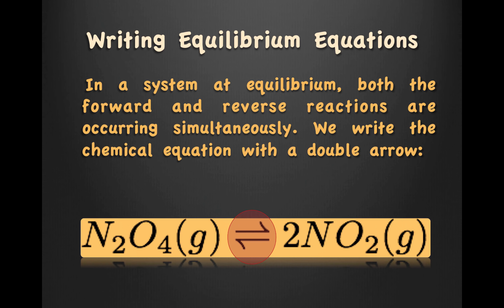Writing equilibrium equations. In a system at equilibrium, both the forward and reverse reactions are occurring simultaneously. We write the chemical equation with a double arrow as shown. We're not going to write two separate equations — we're just going to write a double arrow to show that this system is an equilibrium reaction.